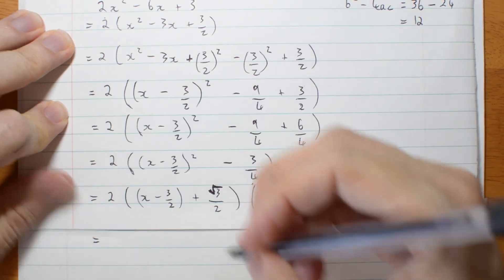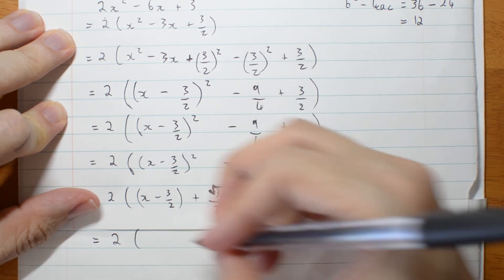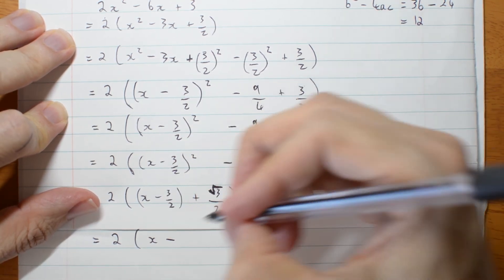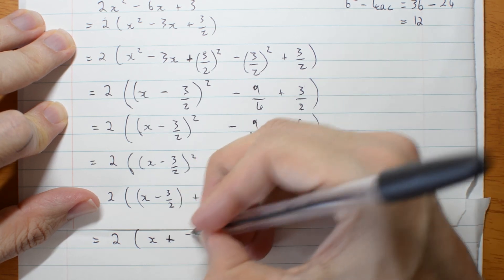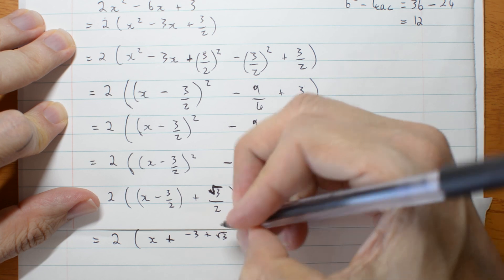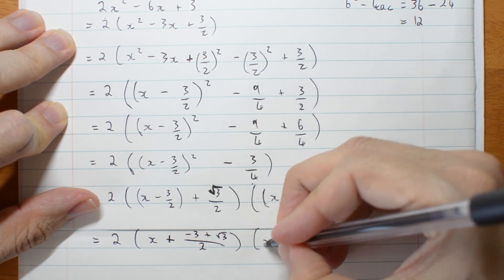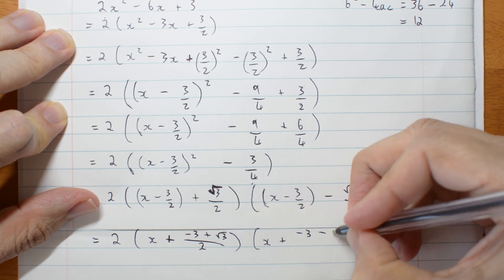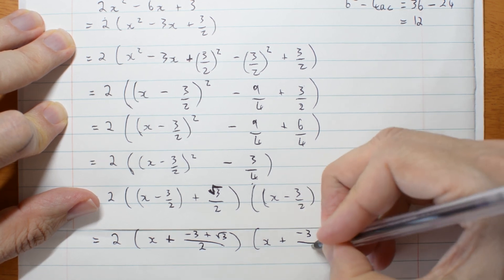And I have indeed just run out of space for writing my answer. So that is 2, I'm just going to simplify this. x minus, I'm going to put all the things over 2 together. x plus negative 3 plus root 3 over 2, times x plus negative 3 minus root 3 over 2.